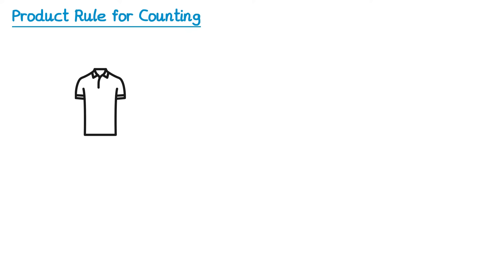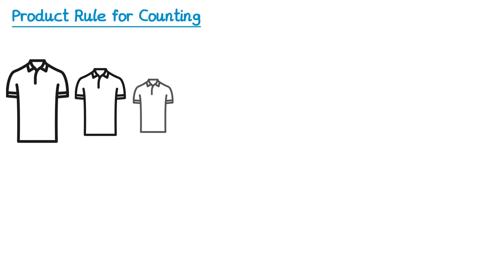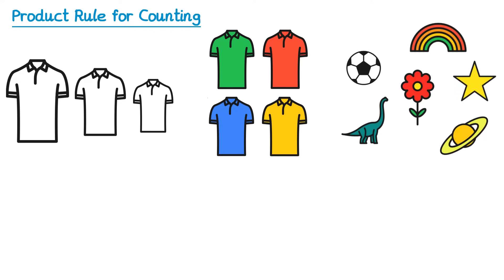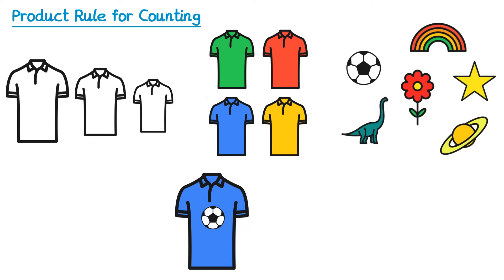Imagine you were buying a new t-shirt and there were three sizes: small, medium and large. You could also buy in a variety of colors — green, red, blue and yellow — and you also have a choice of six different logos to go on the front of the t-shirt: a football, dinosaur, flower, rainbow, star or planet. So one example could be a large blue t-shirt with a football on it, or a small yellow t-shirt with a rainbow on it. The question is: how many different possible t-shirts are there that you could create?